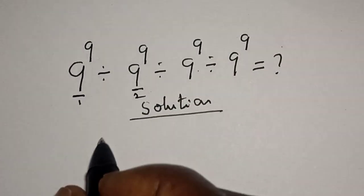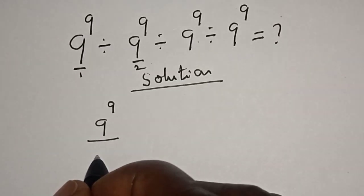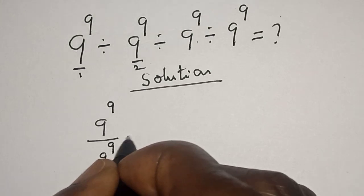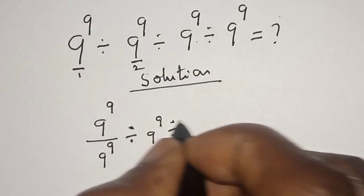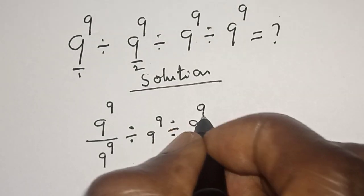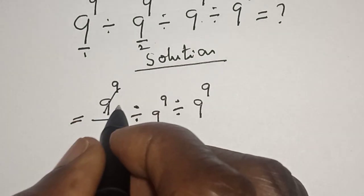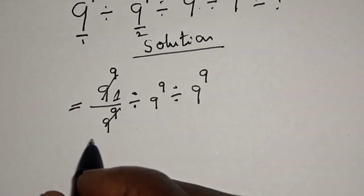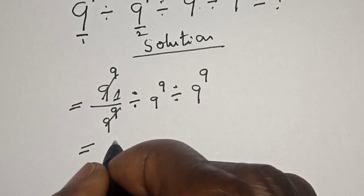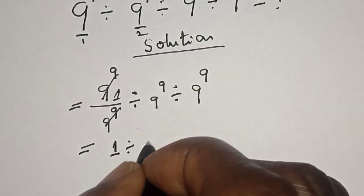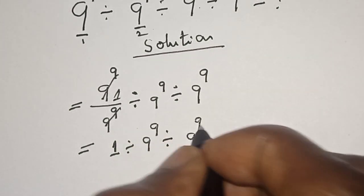We have 9 raised to power 9 divided by 9 raised to power 9 divided by 9 raised to power 9. The first two terms cancel, giving us 1. This is equal to 1 divided by 9 raised to power 9 divided by 9 raised to power 9.